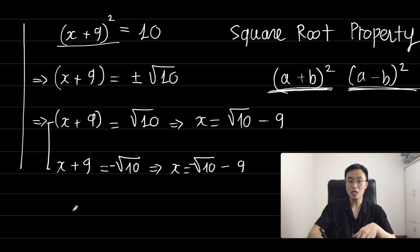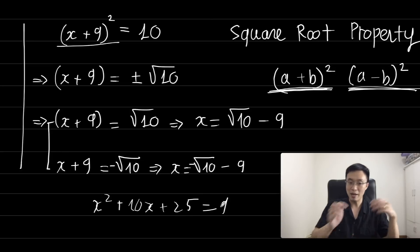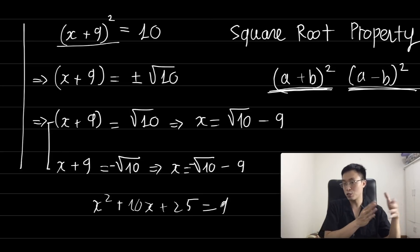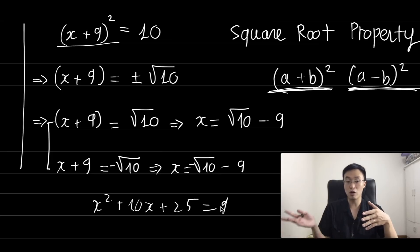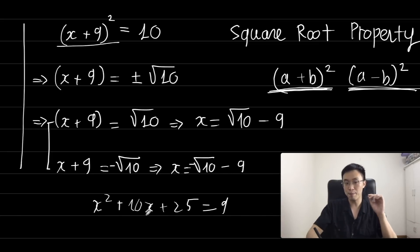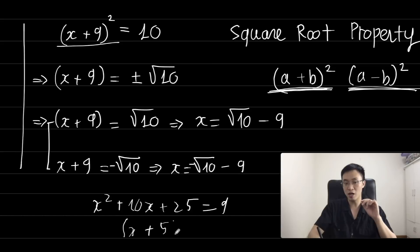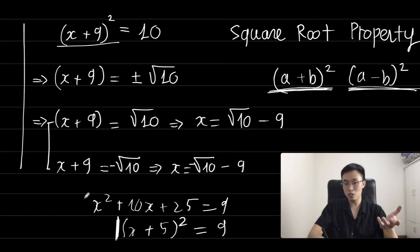For example, you have x² + 10x + 25 = 9. The left-hand side is a perfect square polynomial and the right-hand side is a constant. We can rewrite x² + 10x + 25 in the form (x+5)² = 9, and after that we can use the square root property to solve this equation.